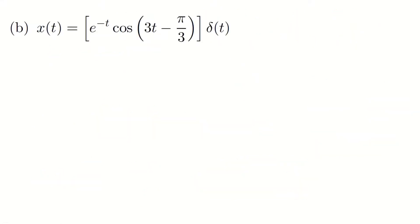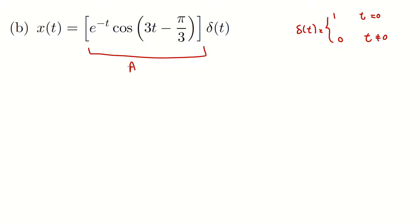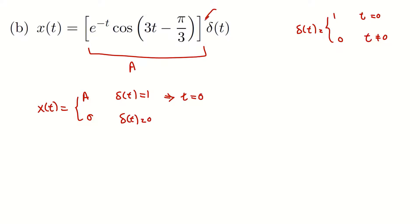Let's check this for the second signal. Again, here we have δ(t), and we know δ(t) equals one if t equals zero, and zero if t is not zero. So let's label the other part by 'a'. I can say x(t) equals 'a' if δ(t) is one — that means if t equals zero — and it is zero if δ(t) is zero, because this is a multiplication. The signal is zero when t is not zero, so there is nothing to consider for that case.